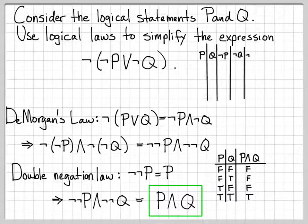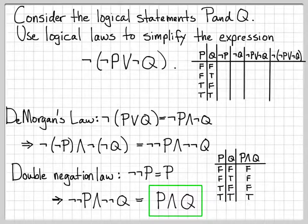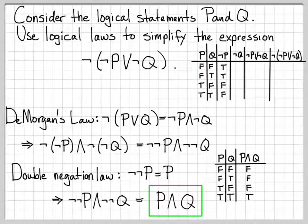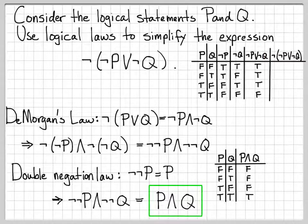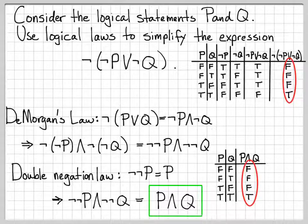Now let's check the original logical expression by making all the appropriate columns. Fill in all the different combinations of P and Q, then fill in the not P column by taking the not of the P column. Similarly, fill in the not Q column by taking the not of the Q column. We can then OR these together — anywhere we have a true, we have a true, and the only place we have a false is when both are false. Finally, the last column is just the not of that result, so we toggle all trues to falses and all falses to true. We end up with F, F, F, T.